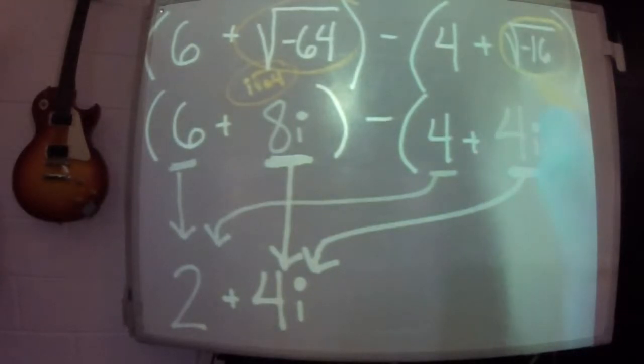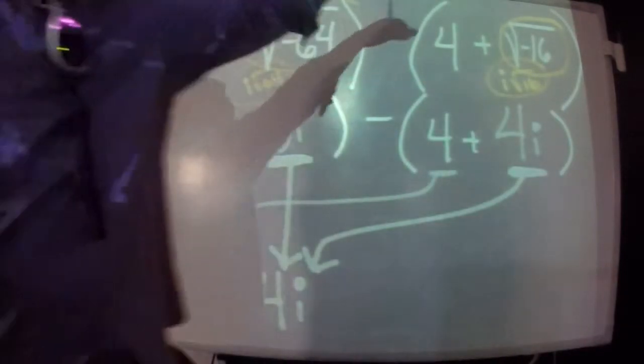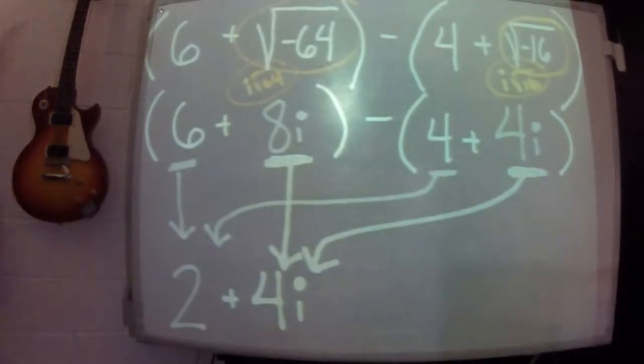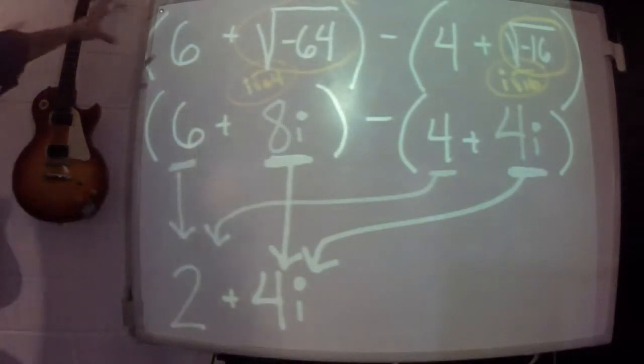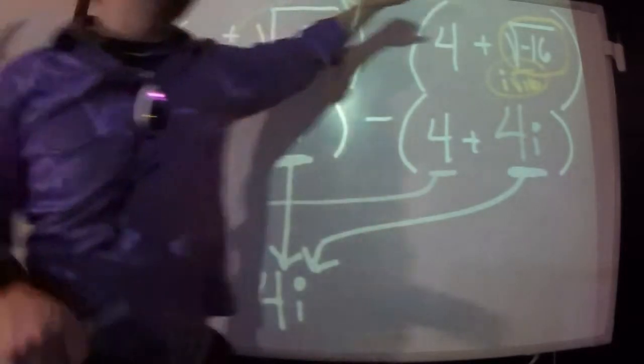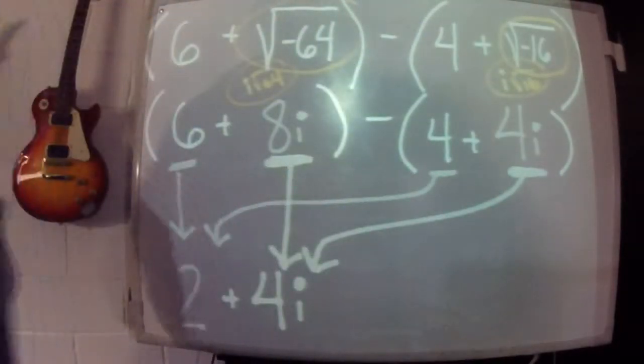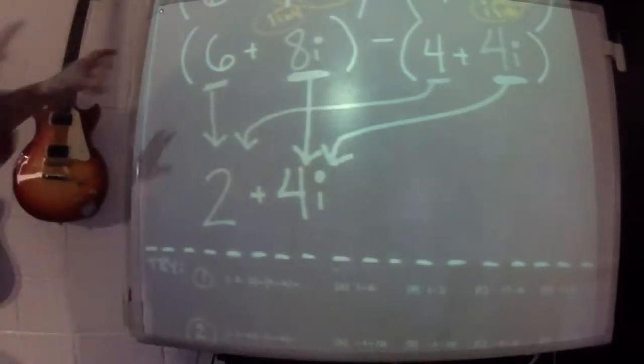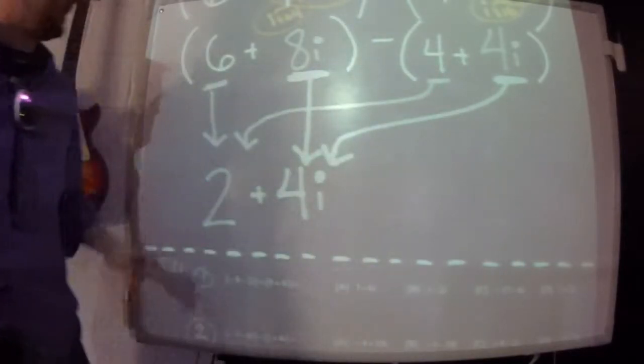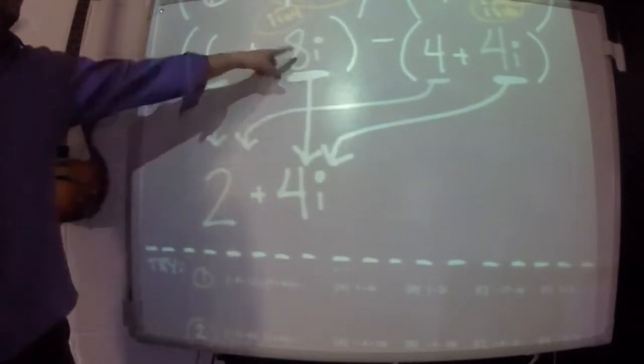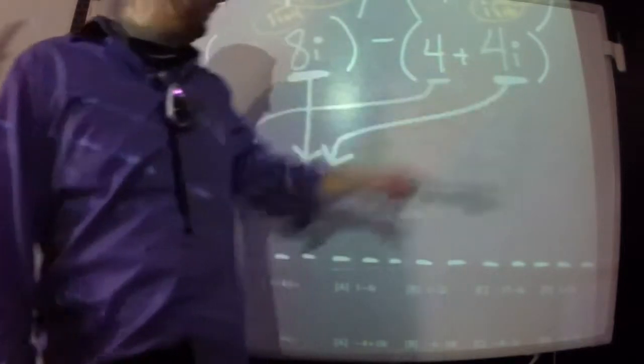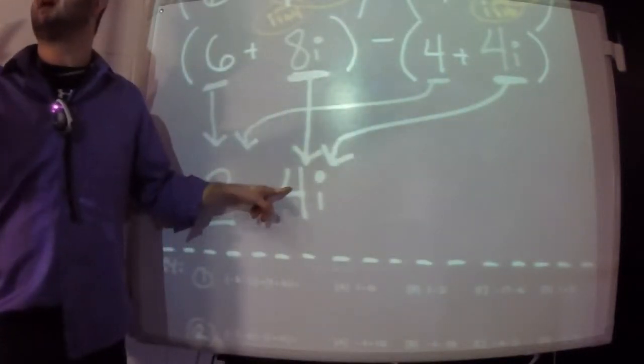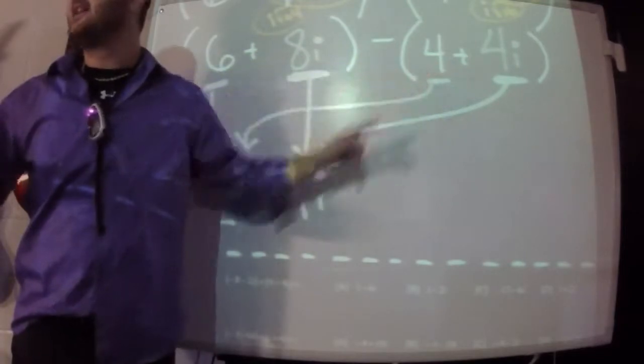And on this other one, I'm going to turn this into i square root of 16, and the square root of 16 is 4. So the square root of negative 16 turns into 4i. So yeah, you can't put this in your calculator, but a little brain power, make this 8i, make this 4i, and then you could, not that you need to, you could just go, okay look, 6 minus 4 is 2, 8i minus 4i is 4.